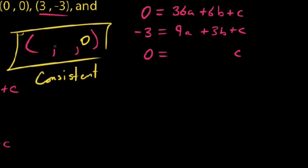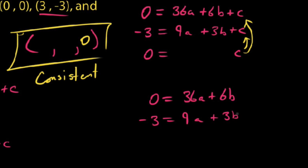Now our task is to solve for a and b. Since we know c = 0, we can substitute this into the other two equations. This produces a system: 0 = 36a + 6b and -3 = 9a + 3b. Now we can solve using elimination or substitution. It would be easy to eliminate the b's by scalar multiplying the second equation by -2.